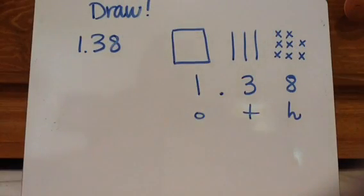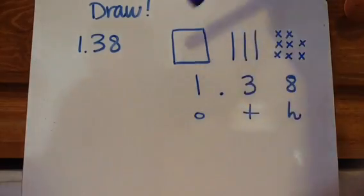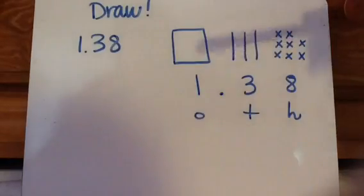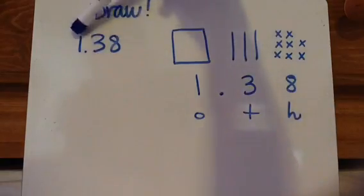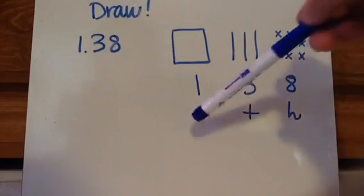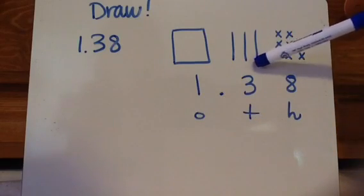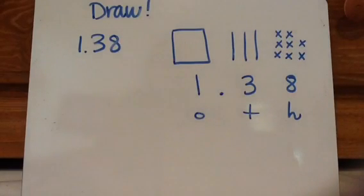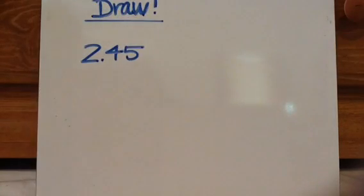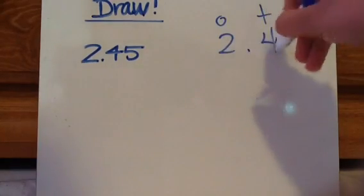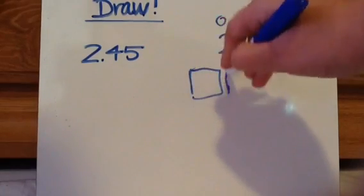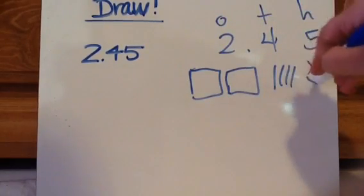I wanted to show you how you can draw to represent decimals. A square is one of these hundreds blocks, a stick is one of these tenths blocks, and an X is the little cube for the hundredths place. So if I have 1 and 38 hundredths, I showed you: that's the ones, the tenths, the hundredths — so there's 8 hundredths, 3 tenths, and 1 one. Let's practice drawing different decimals. Try to draw 2 and 45 hundredths — press pause and then press play when you're ready.